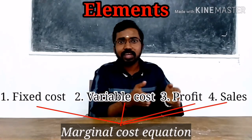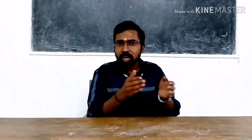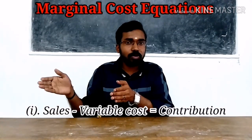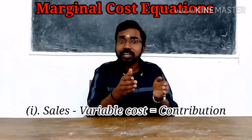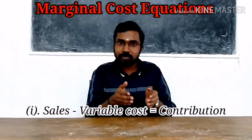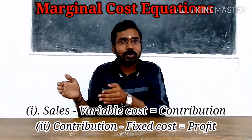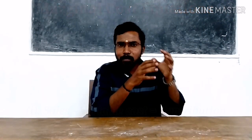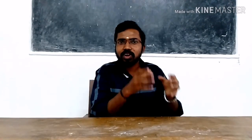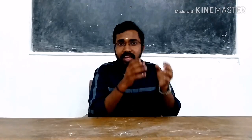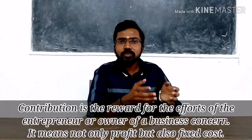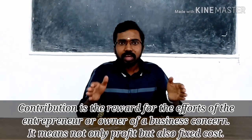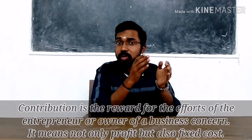From these four elements arises the marginal cost equation. The first equation: sales minus variable cost is equal to contribution. Then, contribution minus fixed cost is equal to profit. This is the marginal cost equation and marginal cost statement. Contribution is the important term here — it is the reward gained by an entrepreneur or owner, but it is not profit. It includes both fixed cost and profit.